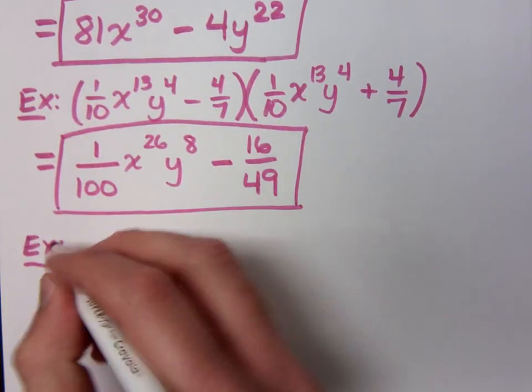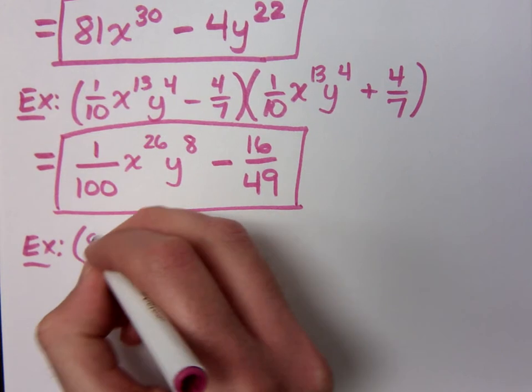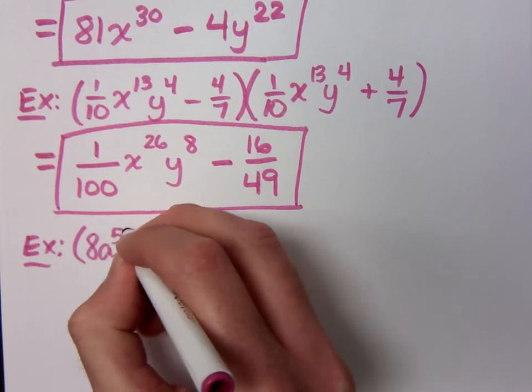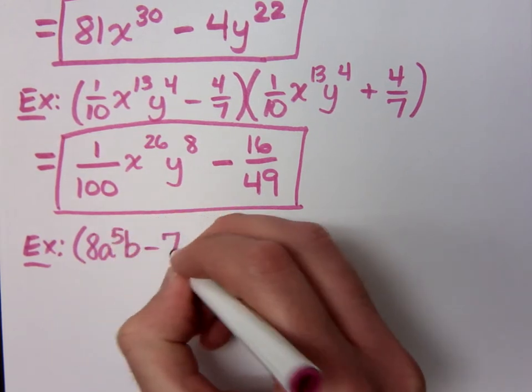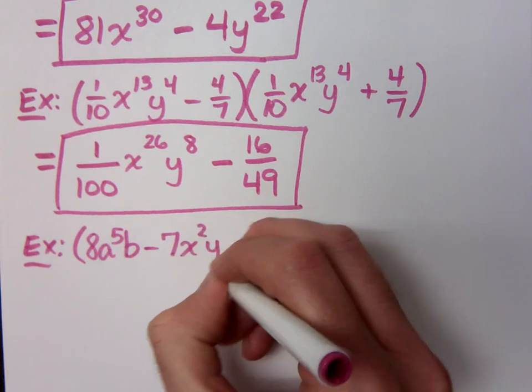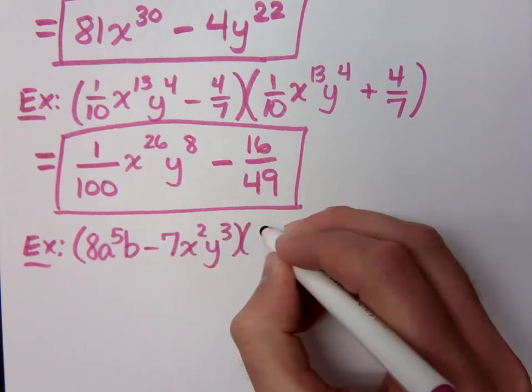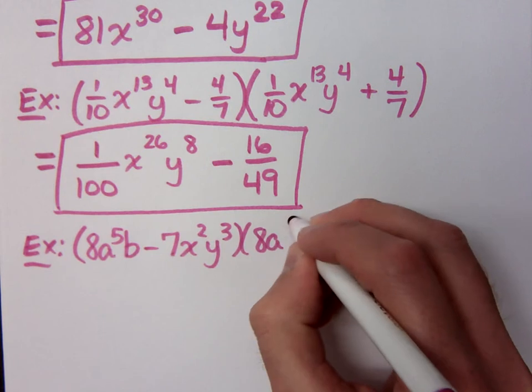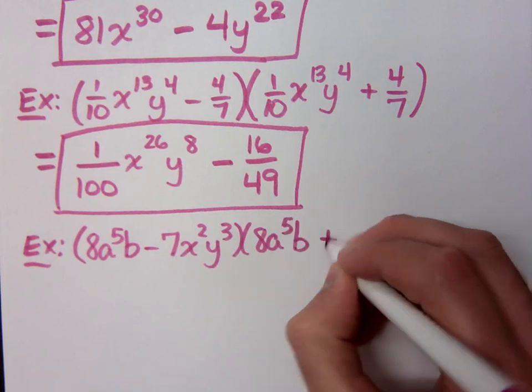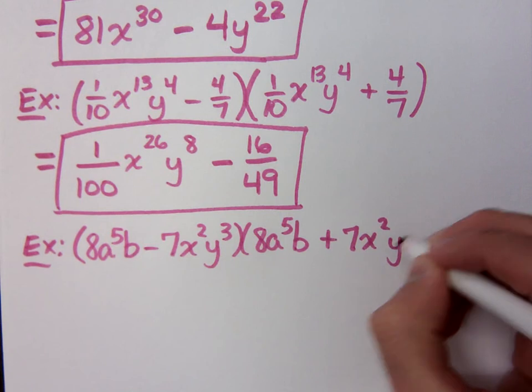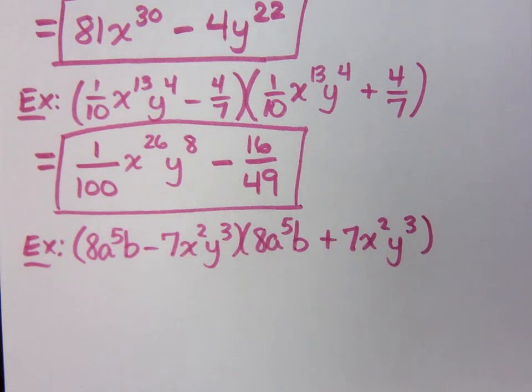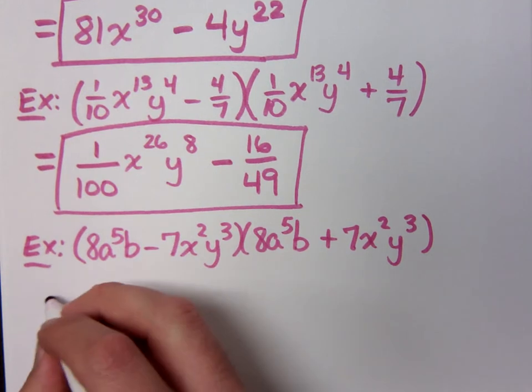8a to the 5th b minus 7x squared y to the 3rd, times 8a to the 5th b plus 7x squared y to the 3rd. Are these conjugates? Yeah. Then multiplying is easy because we know the middle terms cancel. So, when I square that first term, what do I get?